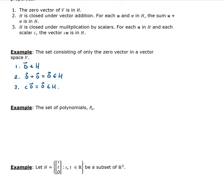So therefore, zero is the zero subspace, and is a vector space in V as well. So the zero subspace is typically written as just the set containing the zero vector. It's the most trivial subspace.